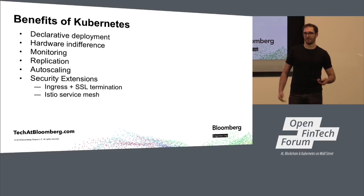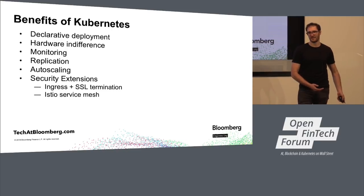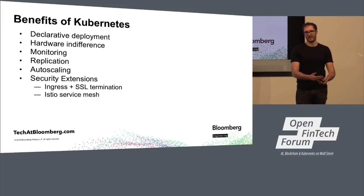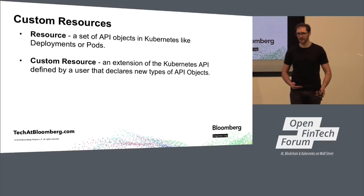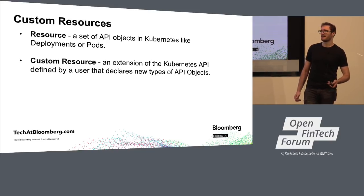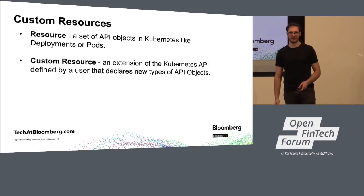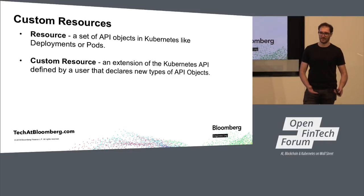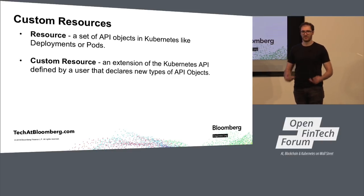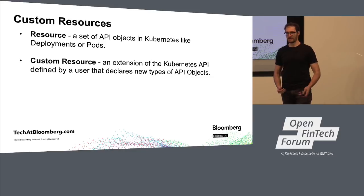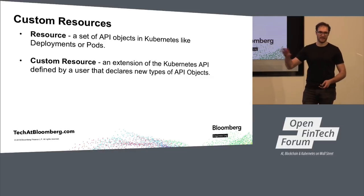I haven't really talked about machine learning yet — just the benefits of Kubernetes. Wouldn't it be really cool if we could marry these two together and make something that speaks ML but also takes advantage of all the good things Kubernetes offers? We've done this with something called custom resources, built into Kubernetes. A custom resource is an extension to the core API objects — a user-defined resource type usually with a corresponding controller that does the magic in the background.